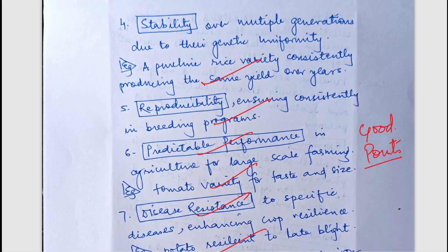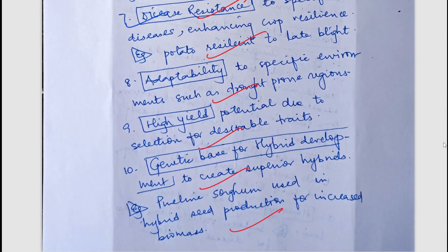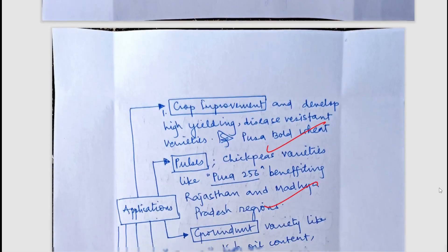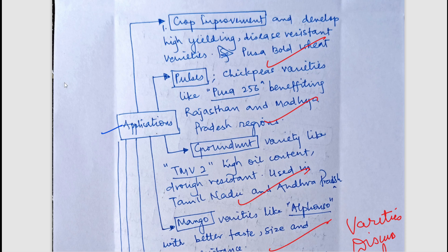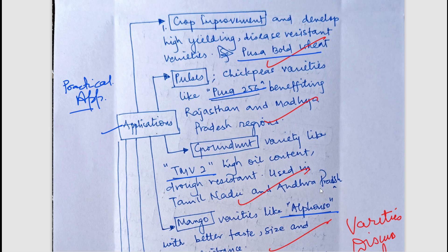Further characteristics of pure line include predictable performance, disease resistance, adaptability, and a high genetic base for hybrid development. All important characteristics have been well mentioned. For the practical applications section, adding variety names enhances the answer. The student added varieties such as Pusa Bold wheat, Pusa 256 groundnut, PMP2, and Alfonso mango — varieties developed through pure line selection.